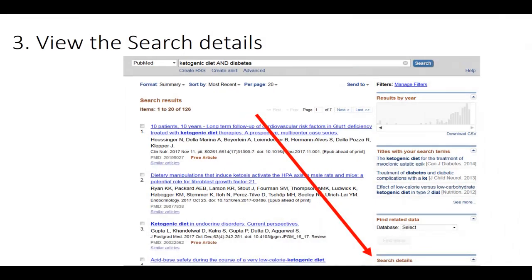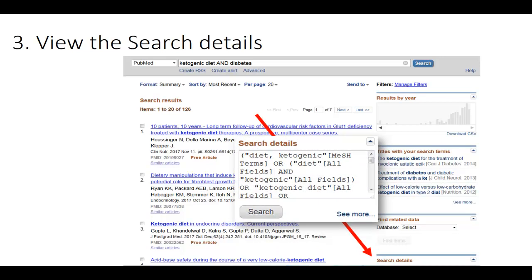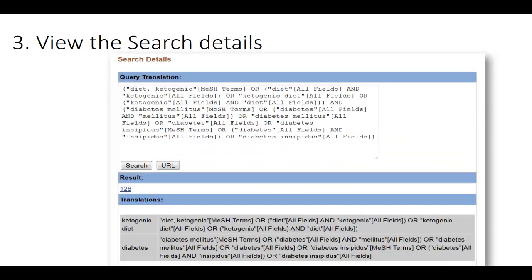Finally, view your search details to see how PubMed mapped your search terms. Search details show up on the right side of the screen when you are using the most recent sort. When PubMed processes your search, it does its best to map your search terms to a relevant MeSH heading. If a heading is found, PubMed will not only search on your keywords — it will also search the MeSH terms.